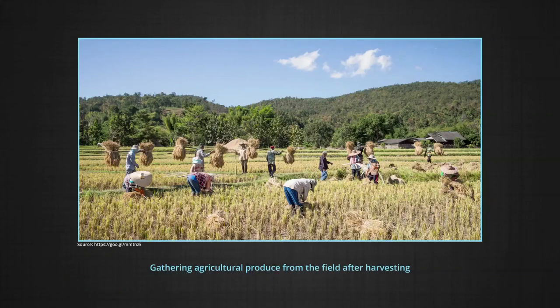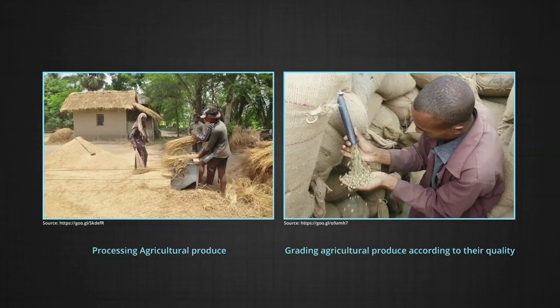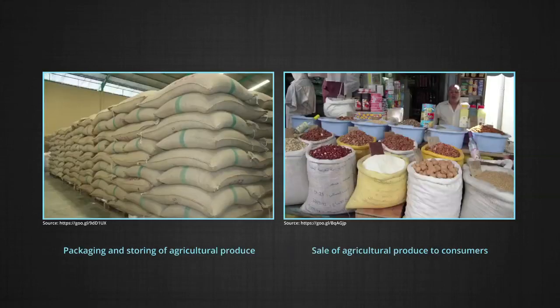Agricultural marketing is not simply the sale of agricultural produce, but it also involves gathering the produce after harvesting, processing the produce, grading them according to their quality, packaging according to buyer's preferences, storing for future sale, and selling them when they get better prices. So, it is a total process.